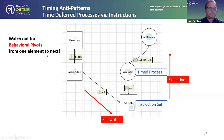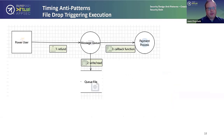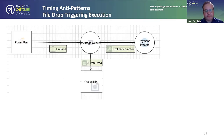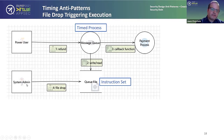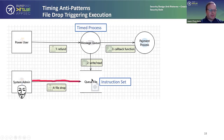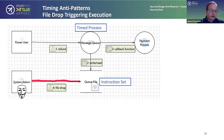Very similar setup: we have a power user that refunds money using a queue, and that queue has a queue file for storing instructions overnight because the payment refund process runs overnight. The instruction set is in the queue file and the time process is the queue processor. The system admin could do a file drop into the queue file. Now we have to ask: what happens if that role flips to malicious? It's a sensitive question — HR says we trust our employees, security people say we don't trust anybody. The reality is there's a middle ground.